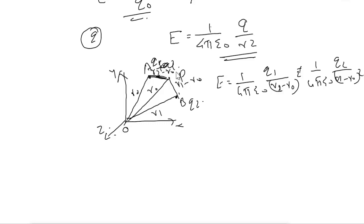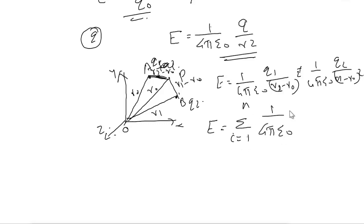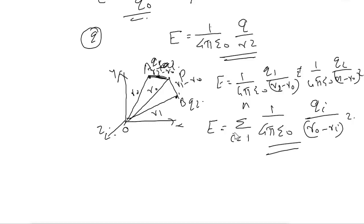If there are n number of charges, the total electric field is written using sigma notation: E = Σ (i=1 to n) [1/4πε₀ × qi / (r0 − ri)²]. The constant 1/4πε₀ can be taken outside. This gives the electric field due to a group of charges. Also remember the formula E equals F by q0.